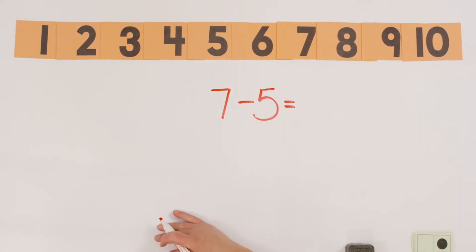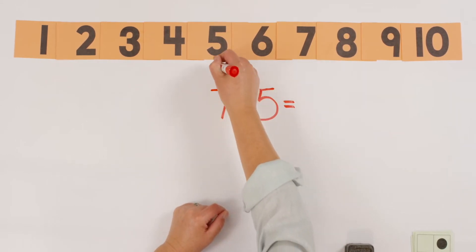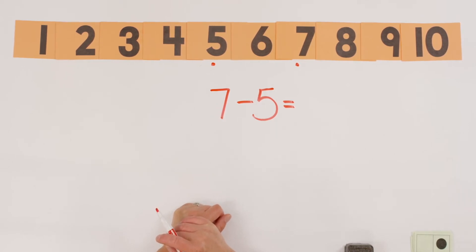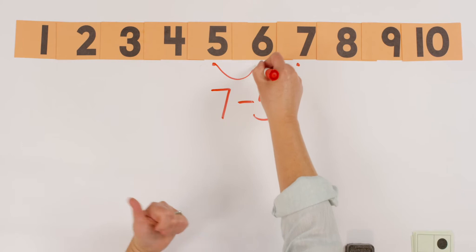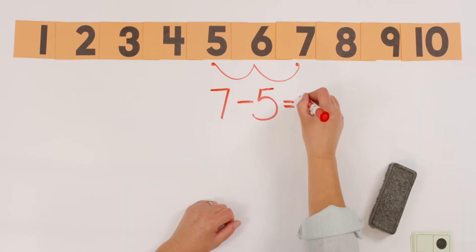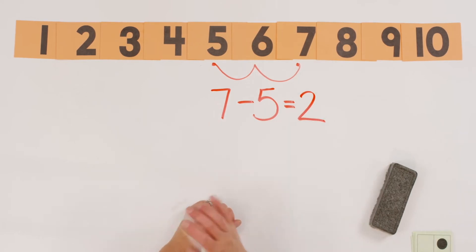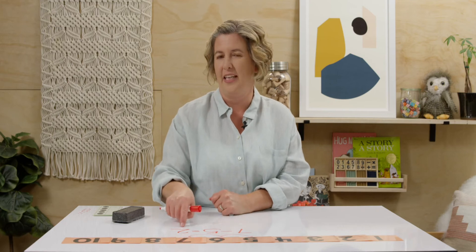7 minus 5 equals. Let's find 7 and 5 on my number line. There's 5 and there's 7. They look pretty close together, so let's count on. I'm going to put 5 in my head and let's count on until we get to 7: 1, 2. How much did it take to get to 7? 2. So 7 minus 5 equals 2. I started with 5 in my head and I counted on 6, 7. 2 more hops till I got to 7.